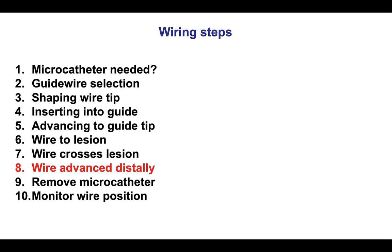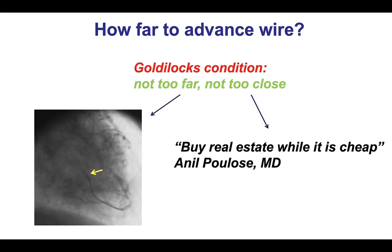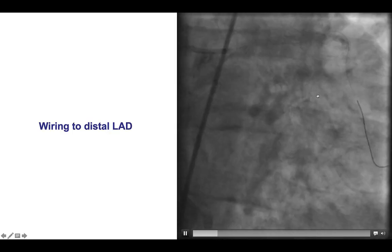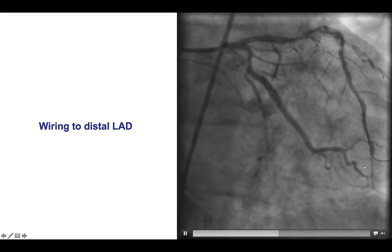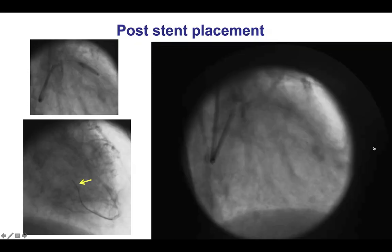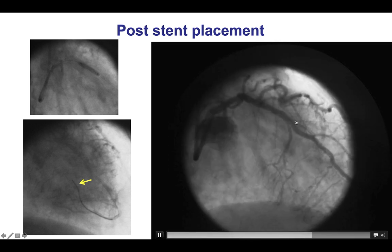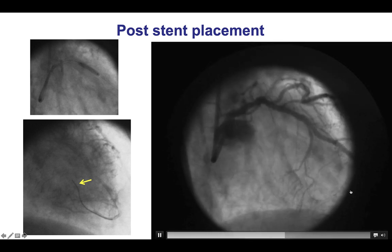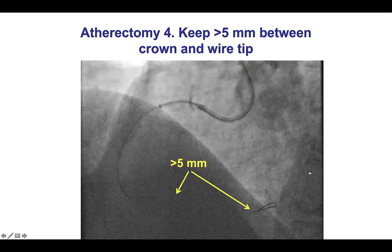After the wire crosses the lesion, step number eight is to advance the guide wire distally — not too far, but not too close to the lesion either. You want to secure a nice distal wire position, because you never know if you will encounter difficulties advancing equipment through the lesion. However, you don't want the wire too far, as that can cause complications such as distal perforation. This is an example of the guide wire in the distal LAD where the position is not optimal because the wire is in a very small distal branch — a potential recipe for perforation. Another example shows a guide wire going too far into very small distal branches of the LAD.